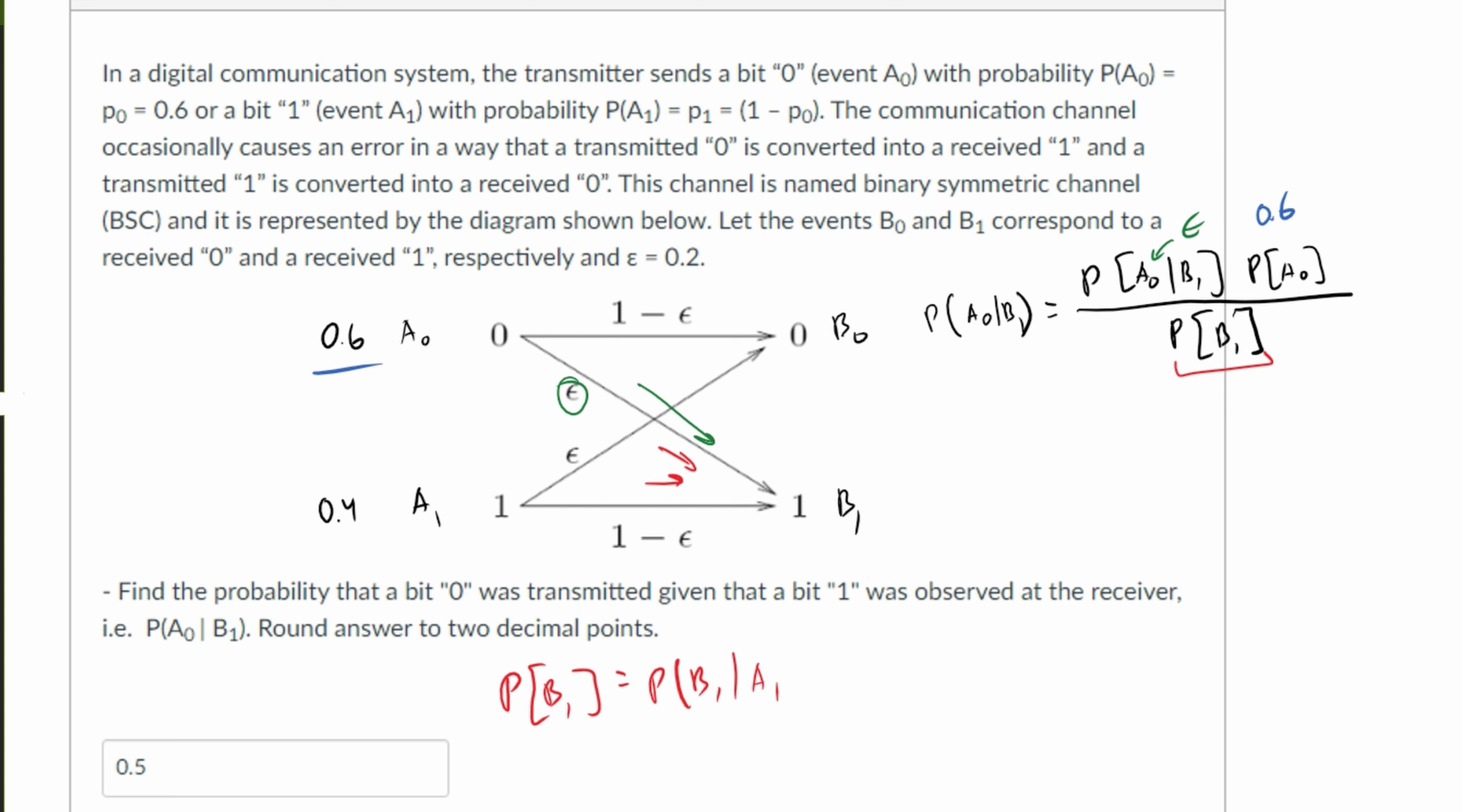Given, we'll start off with the bottom one, A1. So the probability of A1 is going to be here. And to this we're going to add the probability of B1 given we are sent an A0, and then we have the probability of A0 being sent.